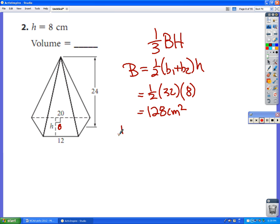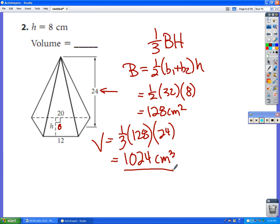Now I need to go 1/3 of that. This is to find the volume, to find our final answer. 1/3 of 128 times the height of the entire pyramid, which is 24. So that's going to be 1024. And so that's going to be 1024 cubic centimeters.